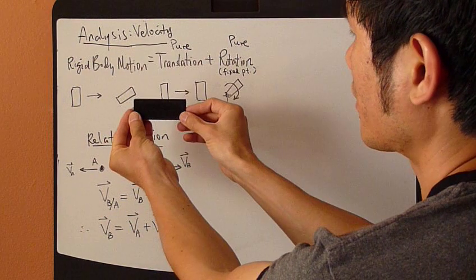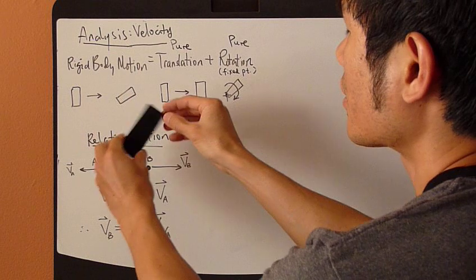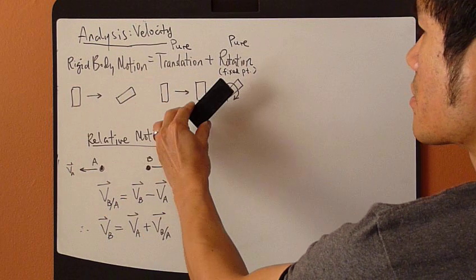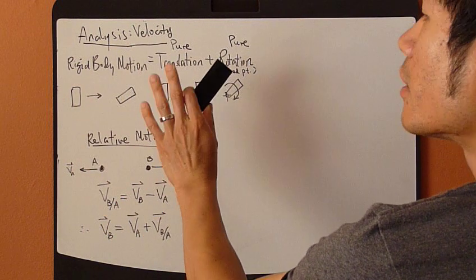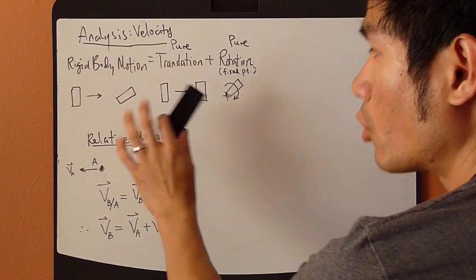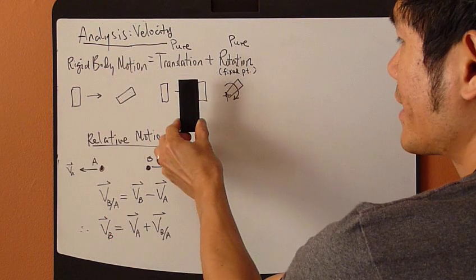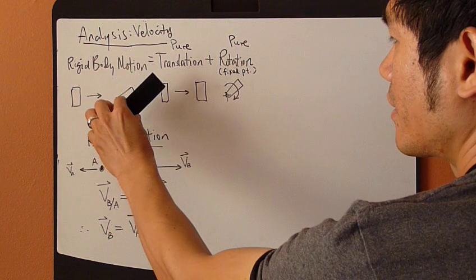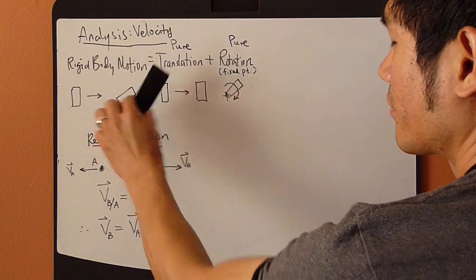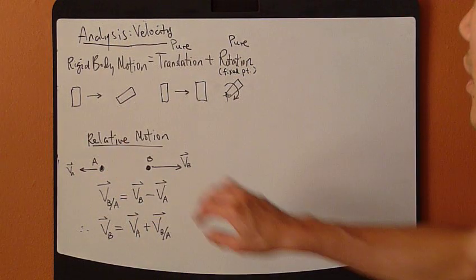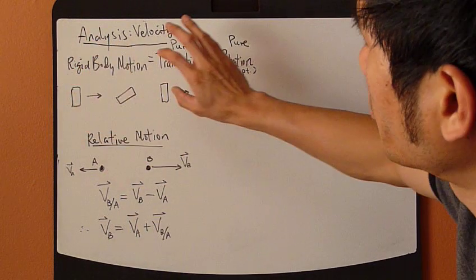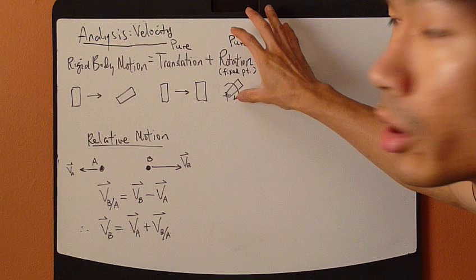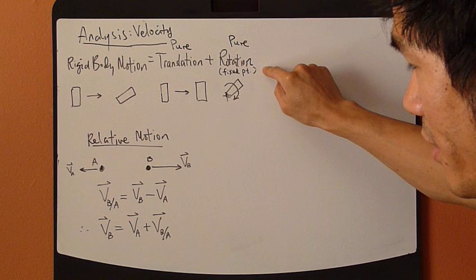This rigid body motion can be split into two things: pure translation from here to here, plus pure rotation about a fixed point. So rigid body motion equals pure translation plus pure rotation about a fixed point.